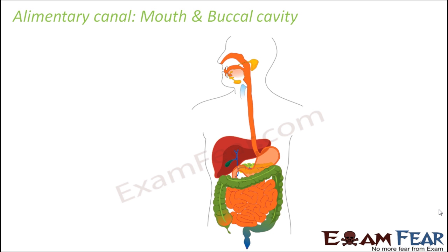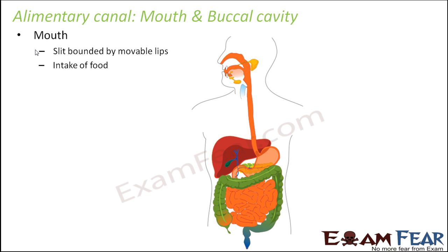We will now discuss each part of the alimentary canal one by one and simultaneously learn about the steps of holozoic nutrition. At each part, a specific step of digestion takes place. Starting with the mouth: the mouth is the slit bounded by movable lips. When you open your lips the mouth opens and food can enter — this is the process of ingestion, the first step.